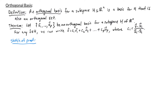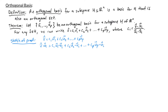Here's a quick sketch of the proof. Since we have a basis for H, by the unique representation theorem, we can write any vector v as a linear combination of the basis vectors. Taking the dot product of both sides with ui gives v·ui = c1(u1·ui) + c2(u2·ui) + ... + cp(up·ui). Since the vectors are orthogonal, all terms except ci(ui·ui) cancel, leaving v·ui = ci(ui·ui). Dividing both sides by ui·ui gives ci = (v·ui) / (ui·ui).